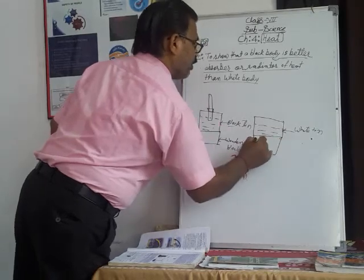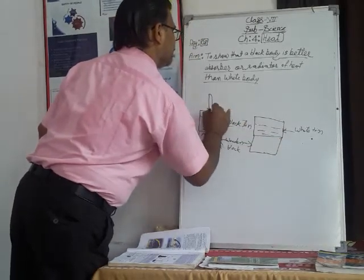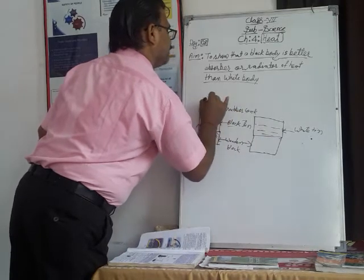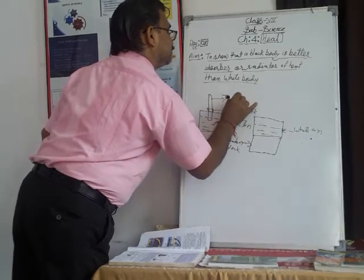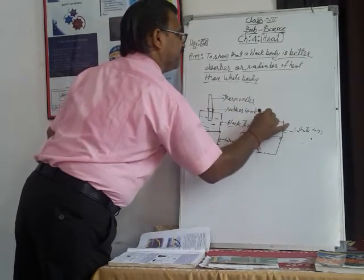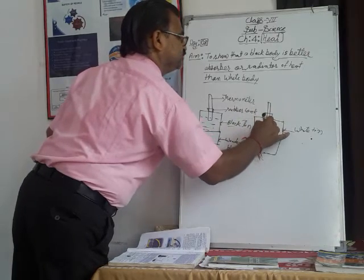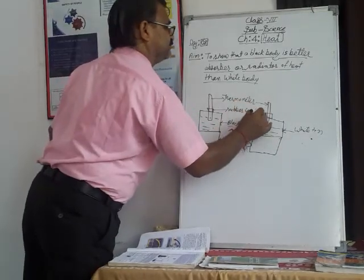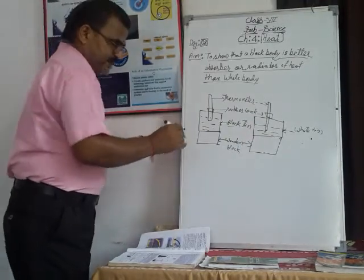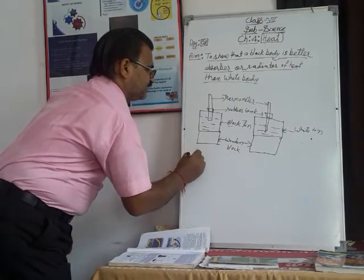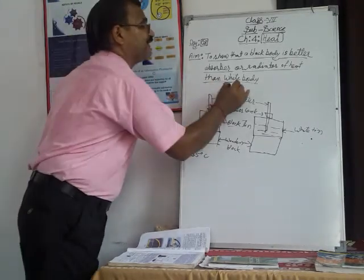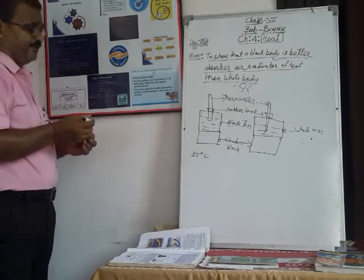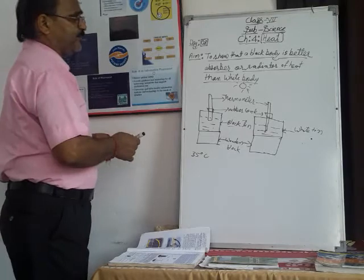Each tin has a rubber cork, a thermometer inserted through it, and is filled with hot water. The same arrangement is made for both. First we note the initial temperature from the thermometer — both may show around 35 degrees Celsius. Then we place the entire setup in bright sunlight for one hour.